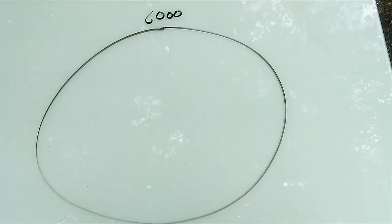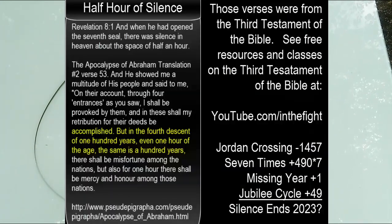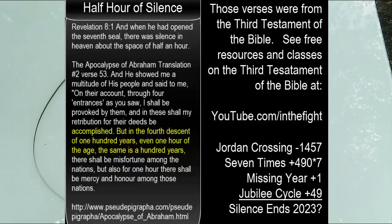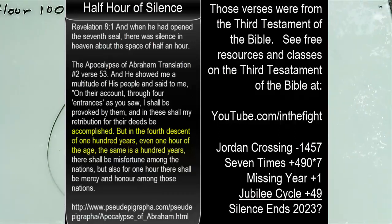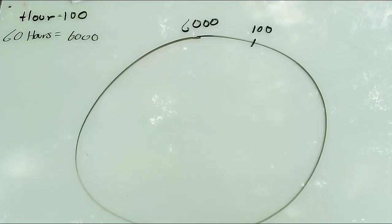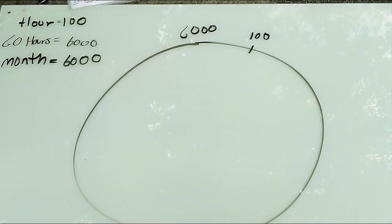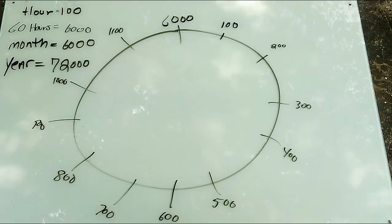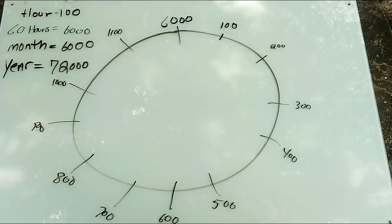But now we learn from Scripture, the Testament of Abraham to be exact, that in this last time, 100 years will be considered an hour. And what's really interesting is if you take an hour to be 100 years, 60 hours is equivalent to 6,000 years. So a month is 6,000 years. So using an hour as 100 years, this is what a day will look like.